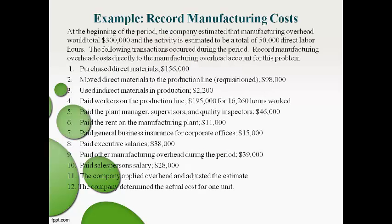Take a moment and read through the information and the transactions we will record in this example. We discussed entries made by the financial accountant and the adjusting entries made by the managerial accountant. In this example, we will record entries as if there is only one step rather than two. Direct materials used and direct labor costs incurred will be recorded directly to the work in process account, and manufacturing overhead expenses will be recorded directly to the manufacturing overhead temporary account.